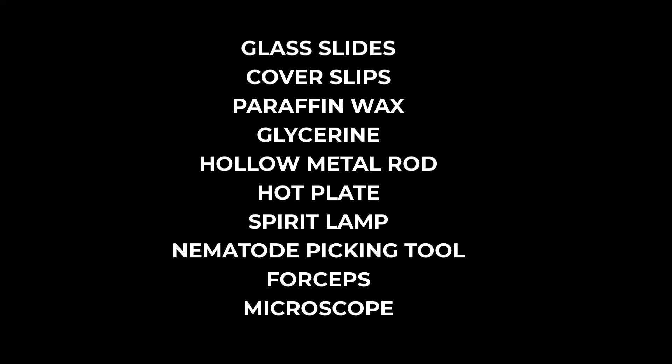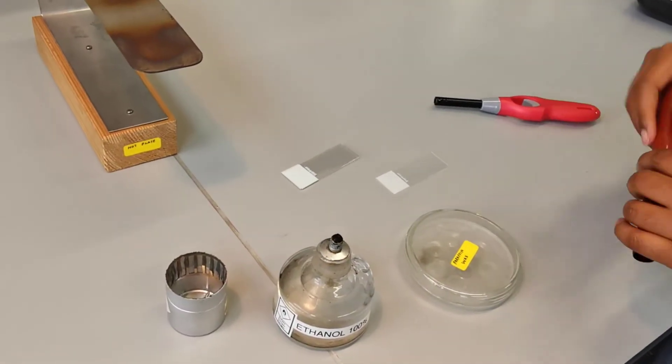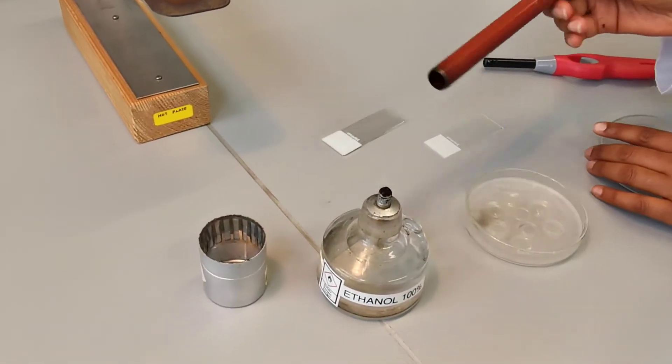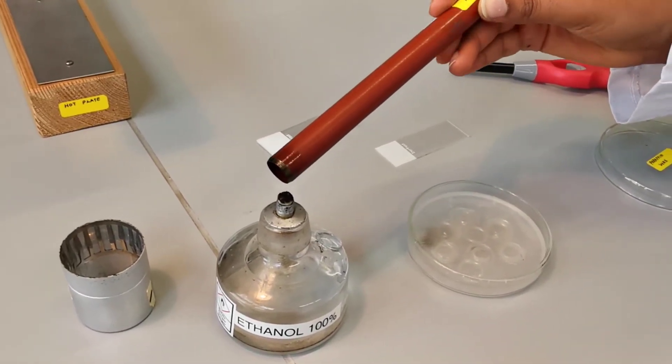These are some of the main requirements for this process. To start with the mounting process, we will first create a ring of paraffin wax on a glass slide using a hollow metal rod as shown here.